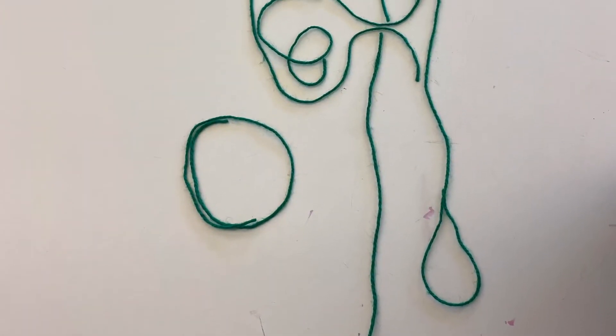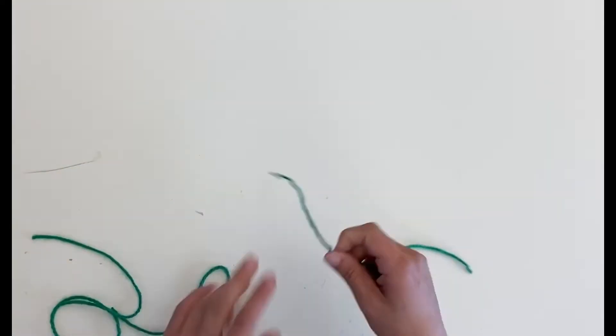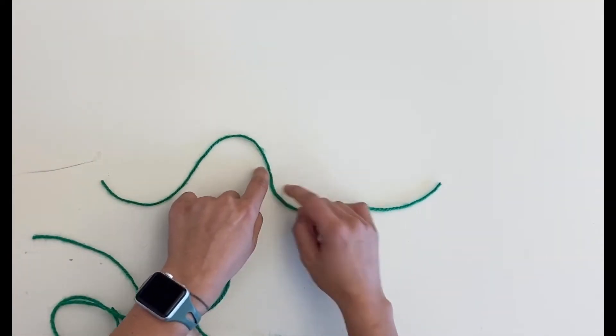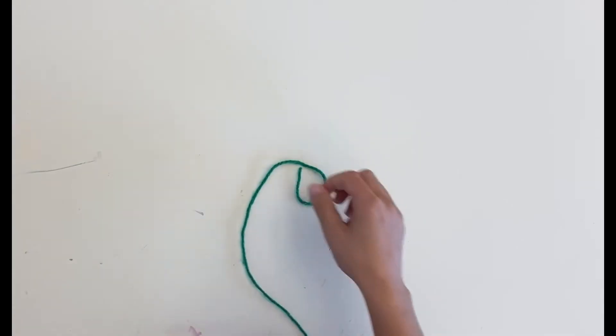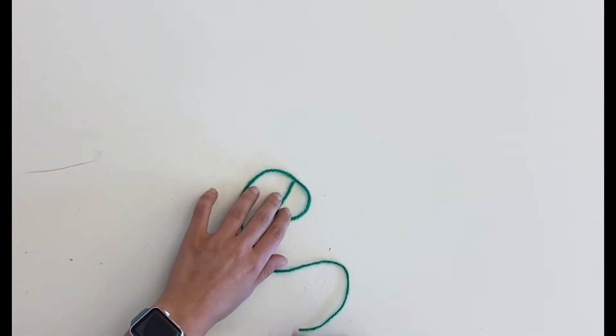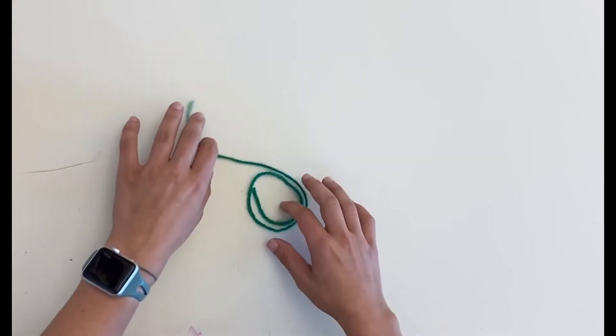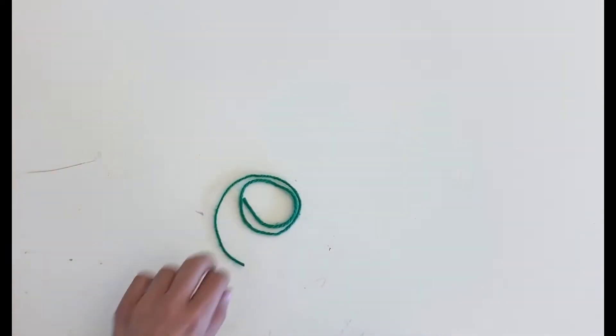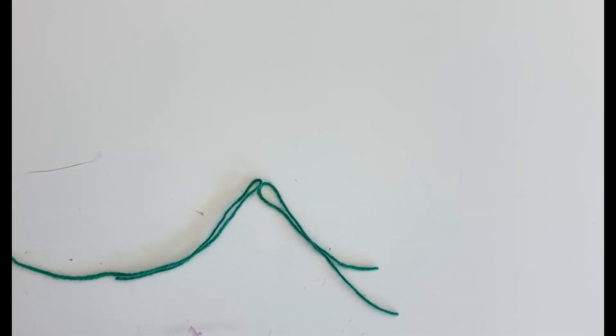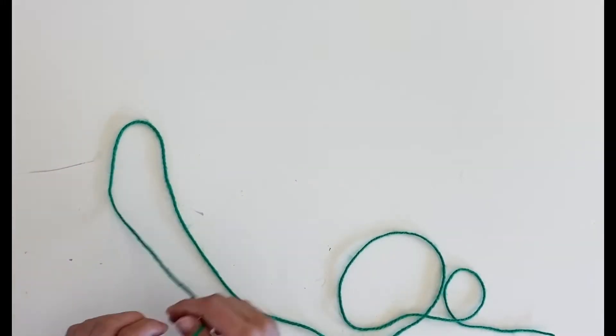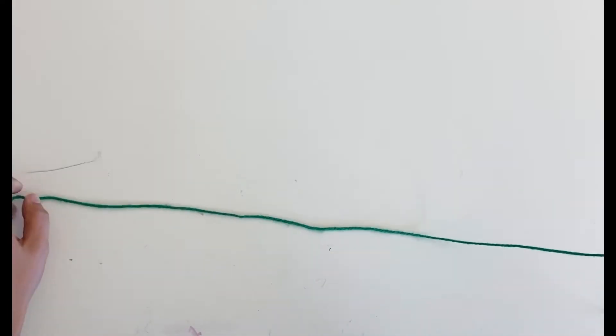So today you are going to experiment with using the string as your line. See if you can make a wavy line, a spiral line, a zigzag line. You can try writing your name or making other letters. Practice making a loopy line.